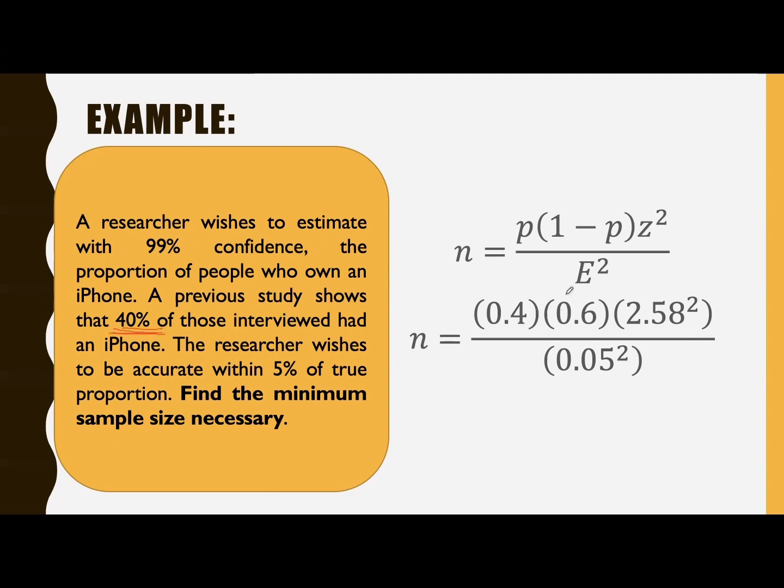So 0.4, and where did you get this 0.6? 1 minus 0.4, that is 0.6 or 60%, and this is 40%. Multiplied by, for 99% confidence, that's equivalent to 2.58 standard score. 2.58 from the 99% squared, divided by the 0.05 margin of error squared.